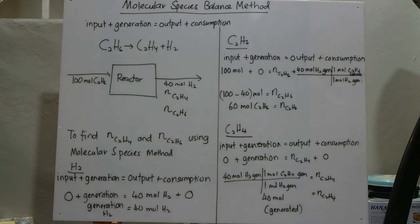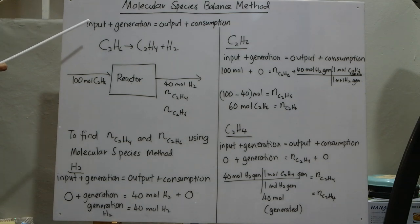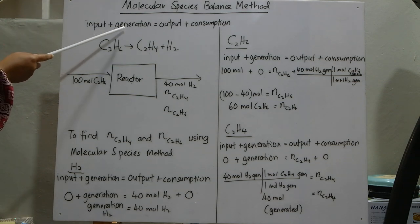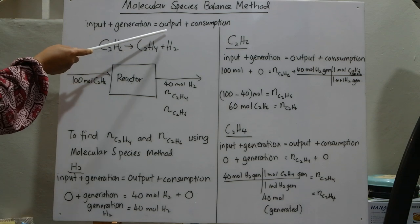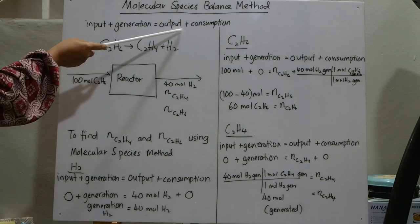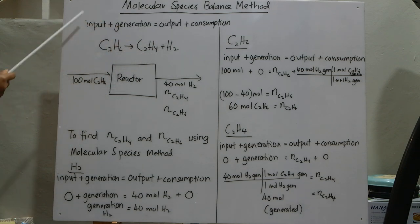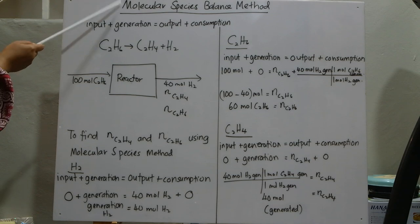Basically in chemical engineering, this is the basic mass balance equation: input plus generation equals output plus consumption. This equation will be used in the molecular species balance method.